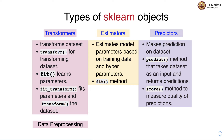Transformers correspond to the data pre-processing step in the machine learning pipeline. Estimators correspond to the training step, and predictors correspond to the inference step. These three sklearn objects are each associated with specific steps in the machine learning pipeline, so based on which component of the pipeline you are implementing, you can determine which sklearn object type to use.